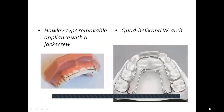The Haas appliance for skeletal expansion has bands cemented on maxillary premolars and molars; contact with the palate allows the appliance to act directly on the underlying hard palate and soft tissues, though difficulty maintaining hygiene and possible palatal inflammation are disadvantages. The Hawley removable appliance with jackscrew can be used for mild posterior crossbite correction in children and young adults, though compliance and retention in the mouth are potential disadvantages.